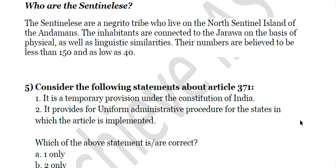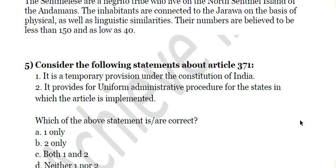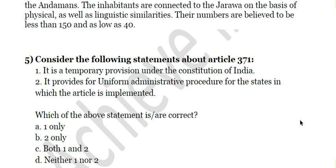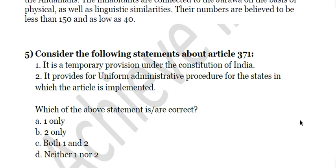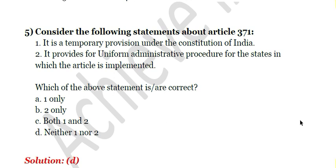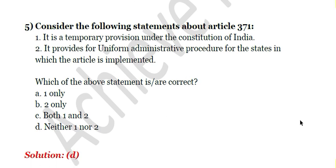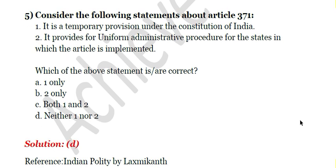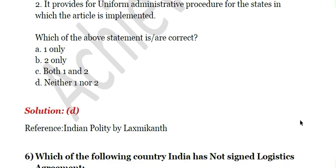The fifth question: Consider the following statements about Article 371. First, it is a temporary provision under the Constitution of India. Second, it provides for uniform administrative procedure for states in which it is implemented. Both statements are incorrect. Article 371 is a permanent provision, and it does not provide uniform administrative procedure. More detail is available in Laxmikanth's Indian Polity.